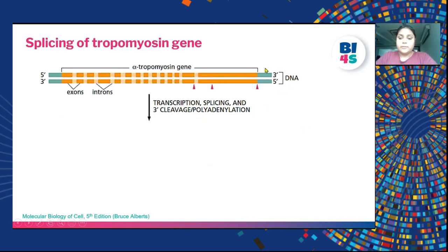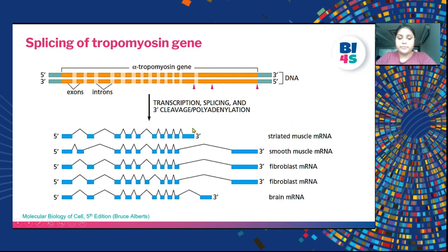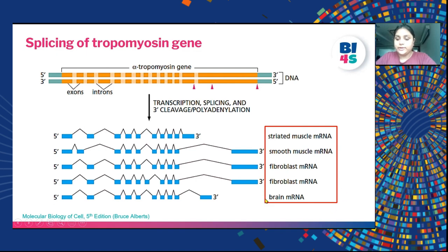Splicing is important because a particular gene — for example the tropomyosin gene — can have multiple types of products through splicing. Different organs and types of muscles use different spliced mRNA products to perform various functions. For instance, a shorter mRNA is present in striated muscles, while another variant is present in brain, and so forth. Therefore, splicing is an important mechanism during transcription.